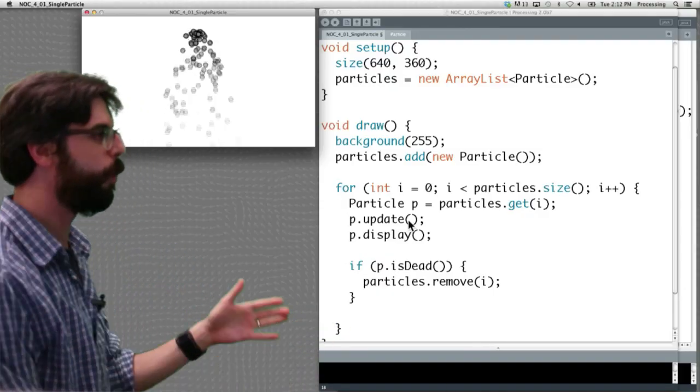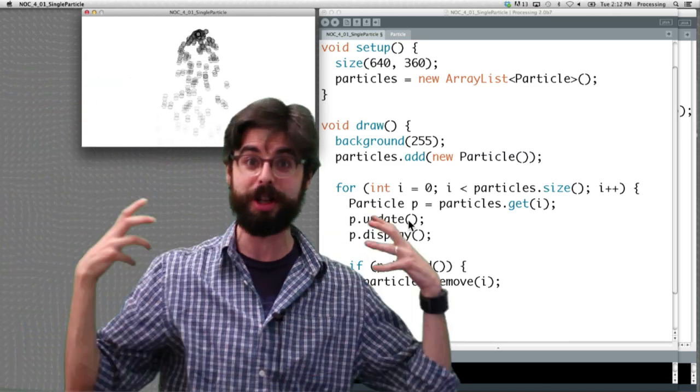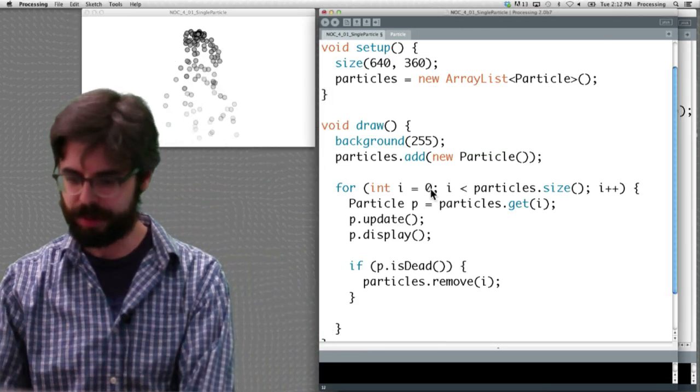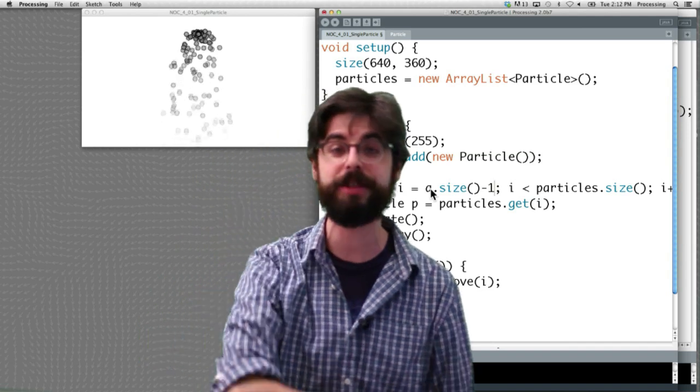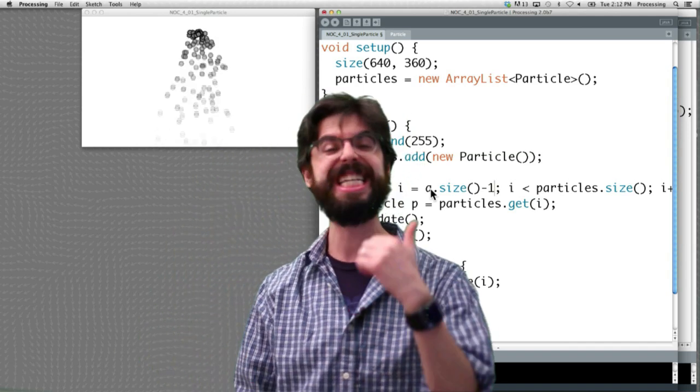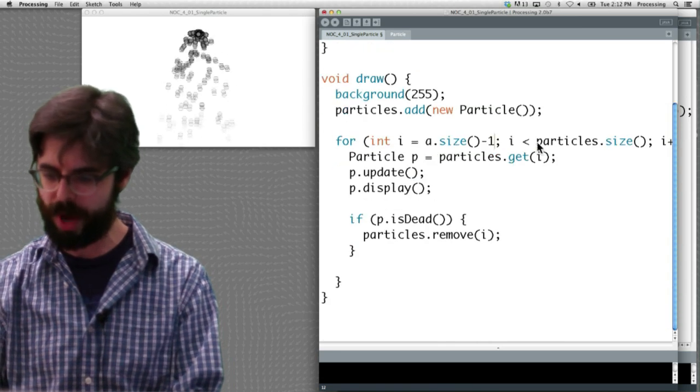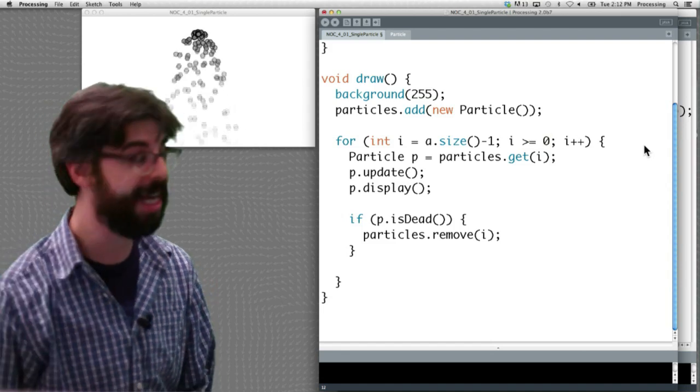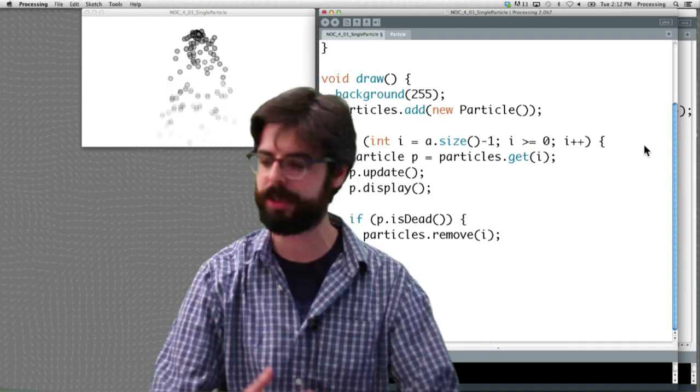How do we go through a list backwards? It's no problem. You know how to do this, trust me. Here's a loop. We start at i equals 0. Instead of starting at the beginning, let's start at the end. What is the last element of the ArrayList? a.size-1, right? If there were 10 elements in the ArrayList, the last one is index 9, 0 through 9. Here we want to go all the way until we get to the end of the ArrayList. Now we want to go down until we get to the beginning. What's the beginning? 0.